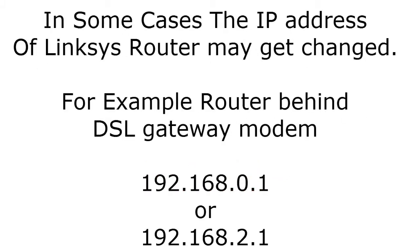In many cases the default IP address of the Linksys router may get changed. For example, if you have a DSL gateway or DSL modem with router function, there will be a conflict between two router IP addresses, so the application will change the IP address of the Linksys router. It may get changed to 192.168.10.1 or to 192.168.2.1.